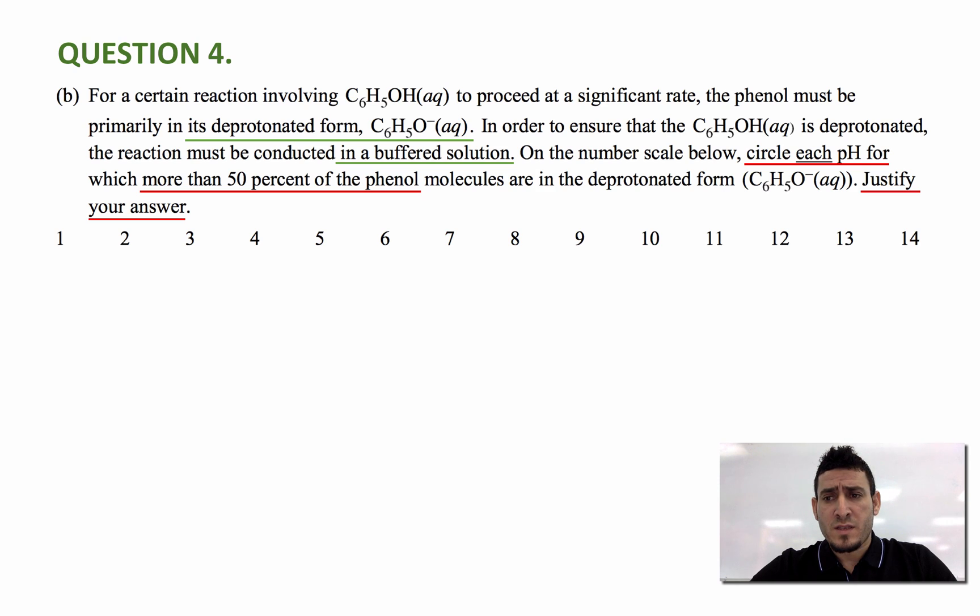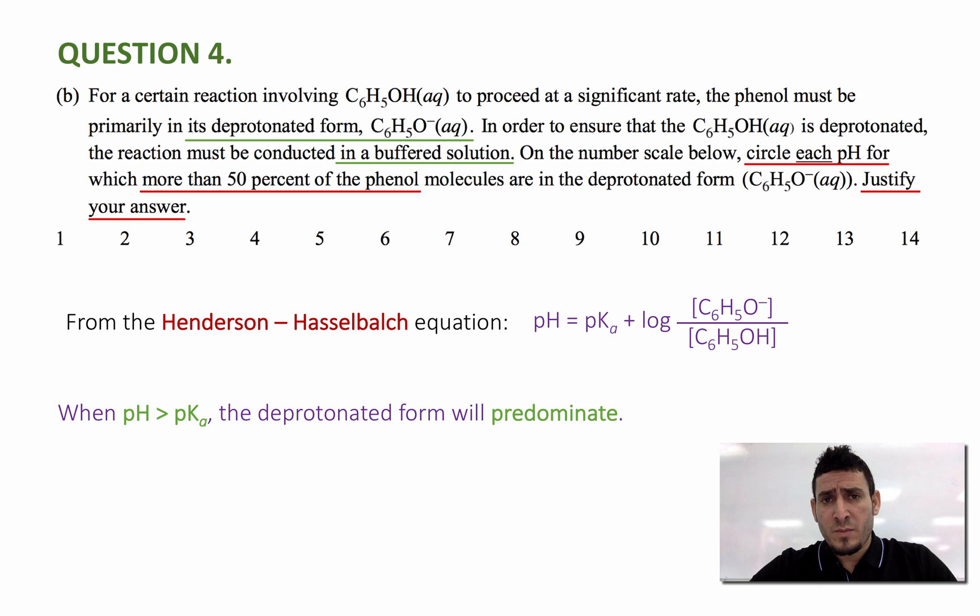We have a scale that's given from 1 to 14, and this looks like a pH scale. In order to answer this question, we need to look at the Henderson-Hasselbalch equation that says pH equals pKa plus log of the conjugate base concentration divided by the concentration of the acid. When pH is greater than pKa, this means that the concentration of the conjugate base is higher than that of the acid, or we can say that the deprotonated form will predominate.